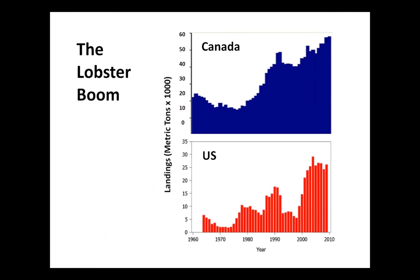This is a time series of lobster landings in metric tons in the U.S. and Canada. Canada harvests about twice as much lobster as the U.S. does. But both countries have seen a pretty dramatic boom in harvest that I'll dig into and try to identify some of the causal agents.